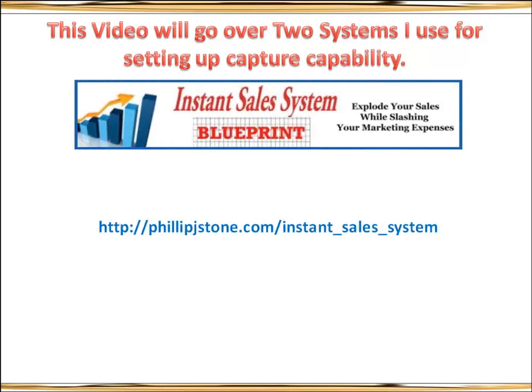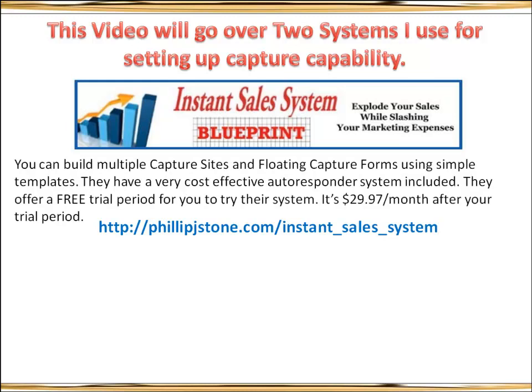The first one is the Instant Sale System, and you can find out more about it at philipjstone.com/instant_sales_system. By the way, remember Philip is with two L's. You can build multiple capture sites and floating forms using simple templates in this system, and they have a very cost-effective autoresponder program that's included as well, with a free trial period.